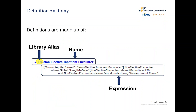Now let's review some of the basic terms used in CQL. CQL uses definitions, and all definitions have a name that captures the meat of the expression — the logic. We can reuse definitions by creating a library. Libraries can be created at the measure level, or we can create global libraries shared across all measures. We use library aliases as a prefix in the definition name to identify which library the definition came from.